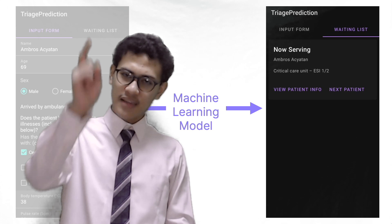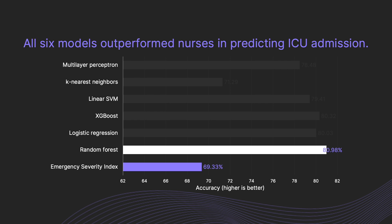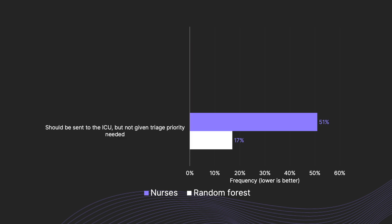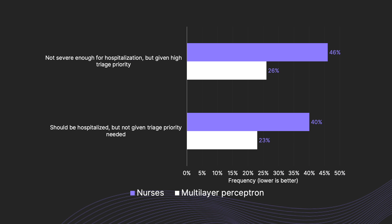Now, let us take a look at our model results. As we can see, the Random Forest model outperformed all other models and nurses in predicting ICU admissions. However, nurses have a lower false negative rate than our model, meaning that they are better at identifying patients not at risk. On the other hand, our model is three times better at identifying patients who are at risk compared to nurses. Similarly, the multi-layer perceptron outperformed the other models and nurses in predicting hospitalization. With hospitalization, our models have significantly lower false positive and negative rates than nurses.